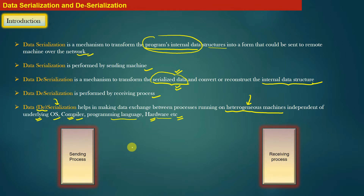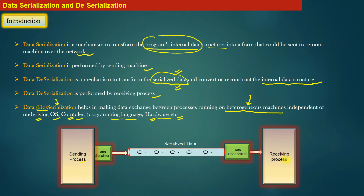As you can see in this diagram, we have a sending process and a receiving process. When the sending process tries to send its internal data structure to the receiving process, the internal data has to be processed by the data serializer on the sending machine. The job of this data serializer routine is to convert the program's internal data structures into serialized data. This serialized data then travels over the network and reaches the receiving process, which may be running on some remote machine.